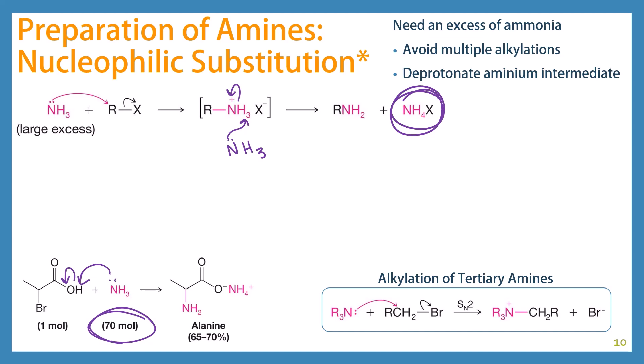You can also alkylate a tertiary amine. So if you have something like triethylamine and you want to add another methyl group, you can add in an alkyl halide and through an SN2 reaction you'll end up with a quaternary ammonium.